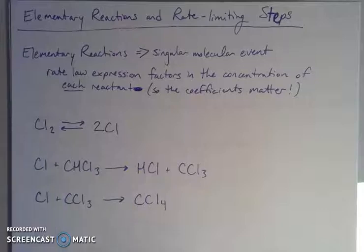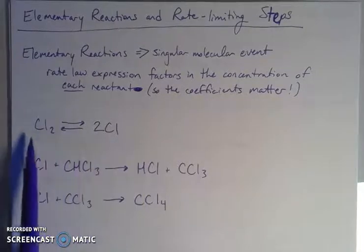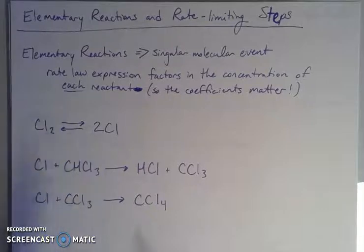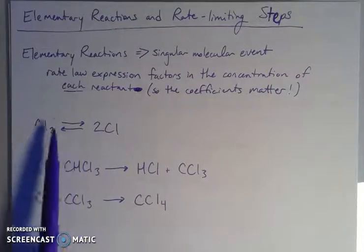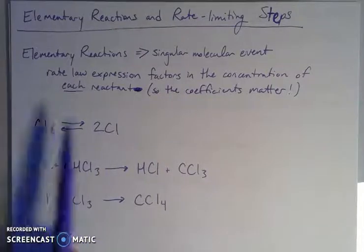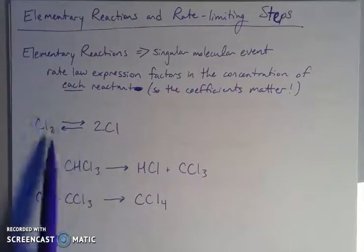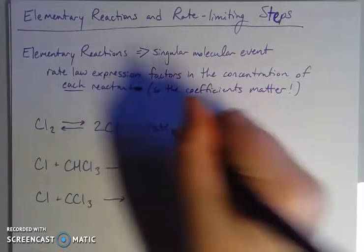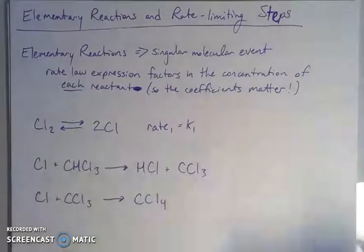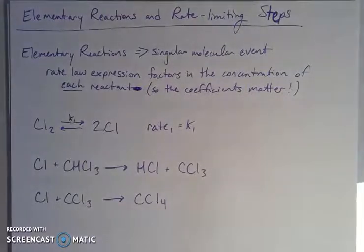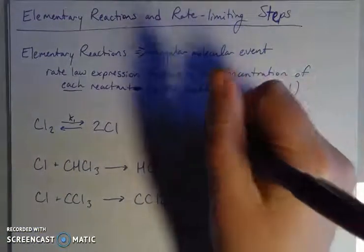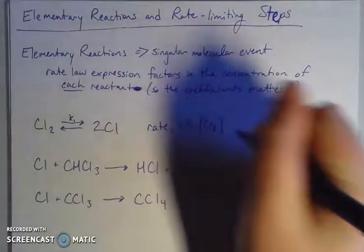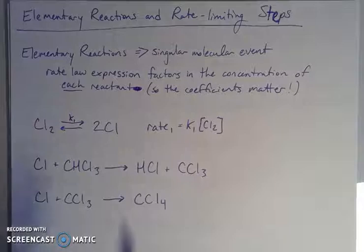So if I have a process in equilibrium where my diatomic elemental chlorine is forming into two chlorine atoms, and this process is in equilibrium — I can tell because I have a forward reaction and a reverse reaction shown with reversible arrows — I could talk about the rate of the forward reaction. Let's call that rate 1, equal to k₁, the rate law constant for this forward reaction, times the concentration of chlorine. There's only one diatomic chlorine reacting.